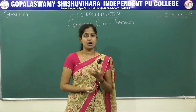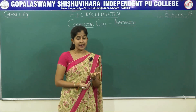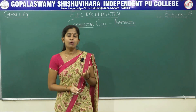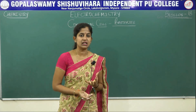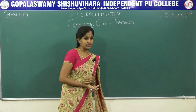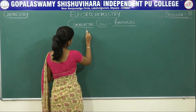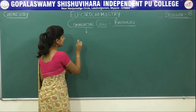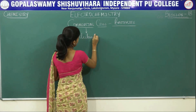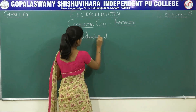The batteries which you use in your wall clocks, toys, cameras, wrist watches — all those come under these electrochemical cells, that is nothing but your batteries. These commercial cells are nothing but your electrochemical cells.